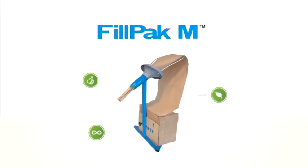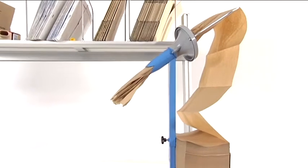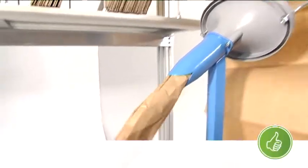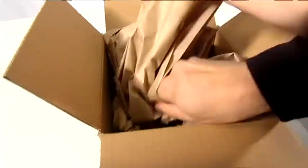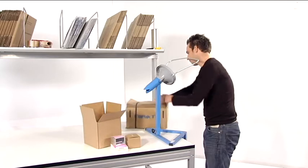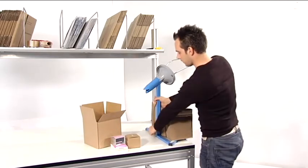The Filpak Manual is the ideal paper fill solution for low volume pack station operations. The simple design allows anyone to shape the one layer paper effectively into a filling material to protect products during shipment. The unit doesn't need electricity, which also makes it appropriate for non-industrial settings.